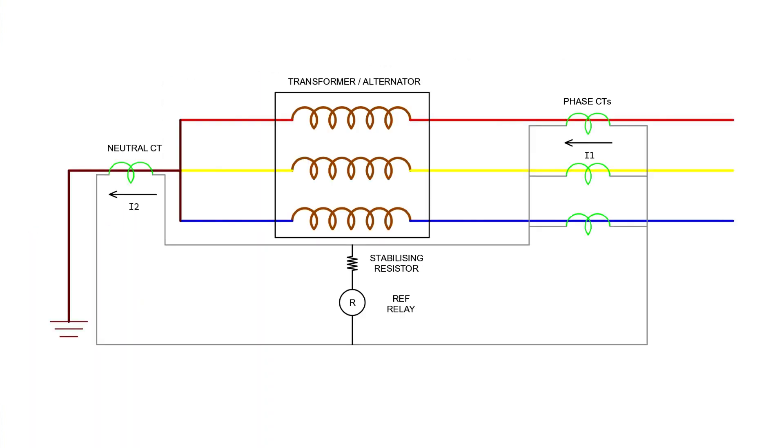As you can see in the diagram, the CT secondary of each phase of the device are connected together. Then common terminals are connected to the secondary of a neutral current transformer or NCT.